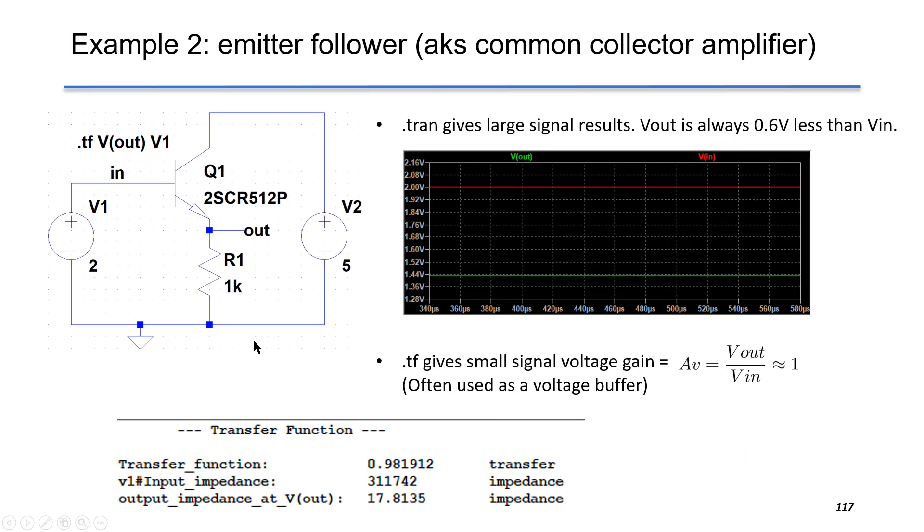An emitter follower is illustrated in this example. The input voltage is at the base and the output voltage is at the emitter. The power supply is added at the collector.